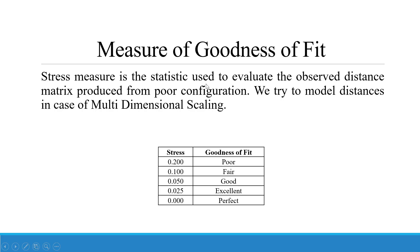Measures of goodness of fit: the stress measure is a statistic used to evaluate the observed distance matrix produced from the configuration in multi-dimensional scaling. The stress values are interpreted as follows: 0.2 is poor, 0.1 is fair, 0.05 is good, 0.025 is excellent, and 0.00 is perfect.